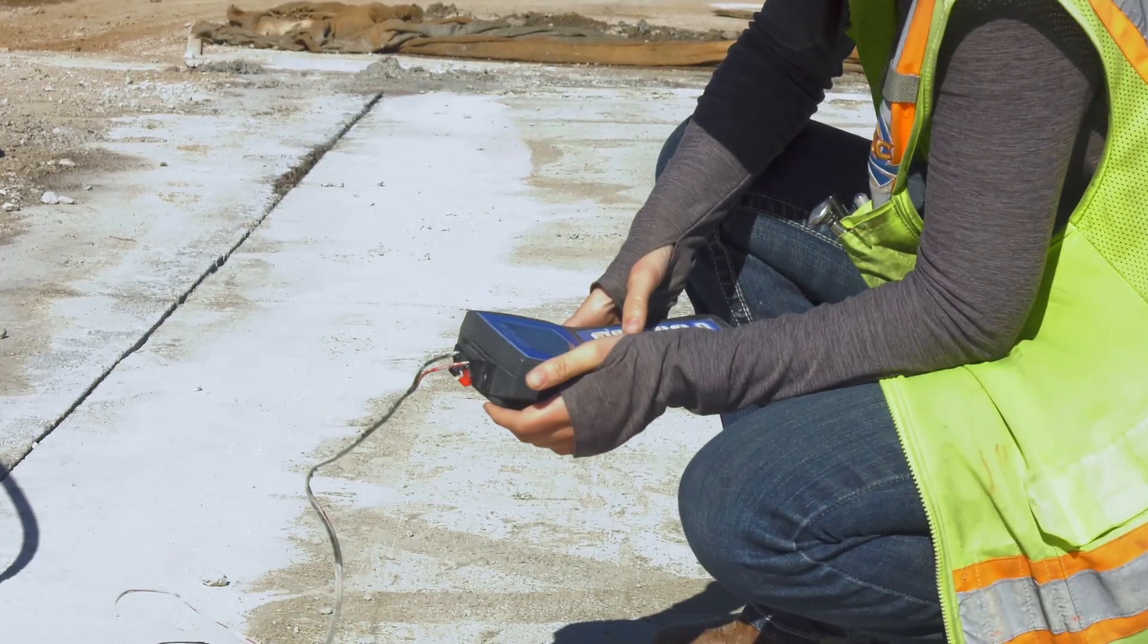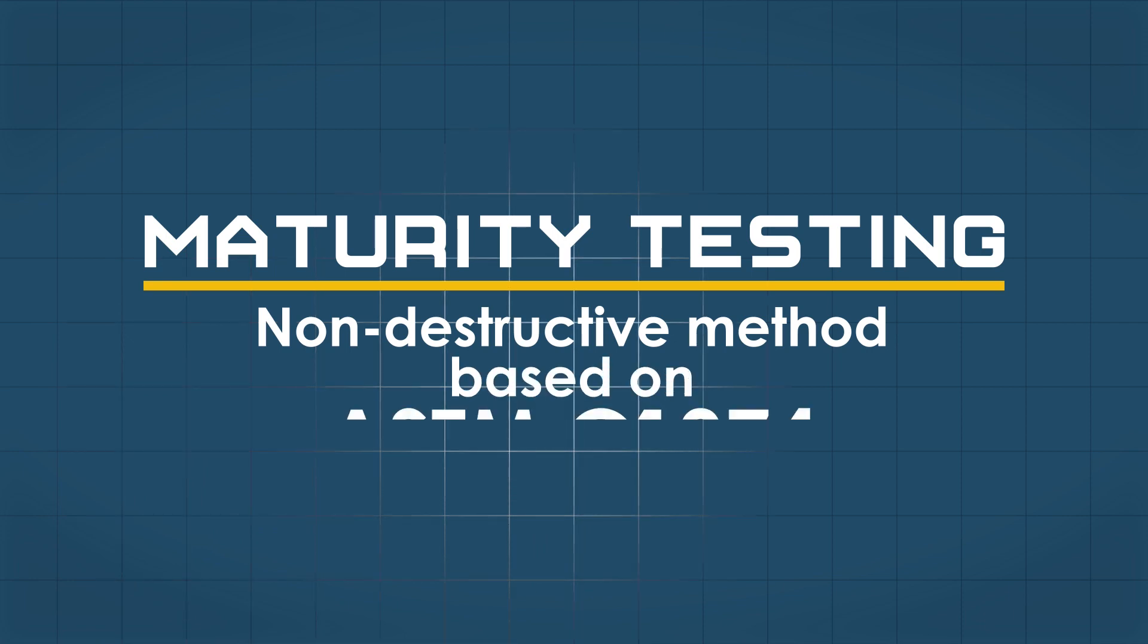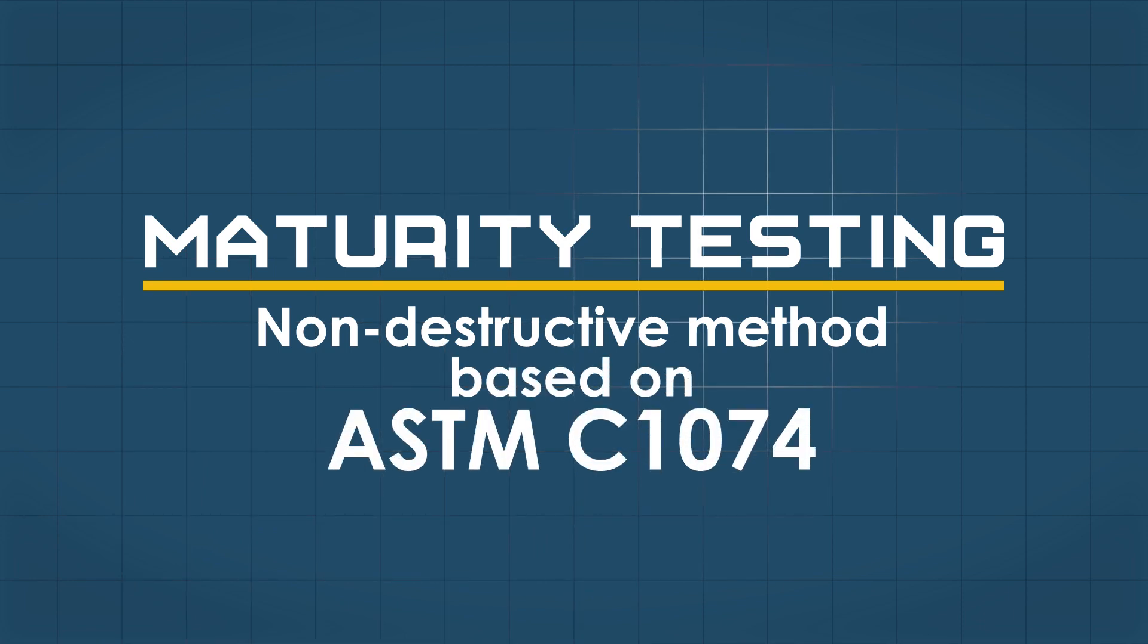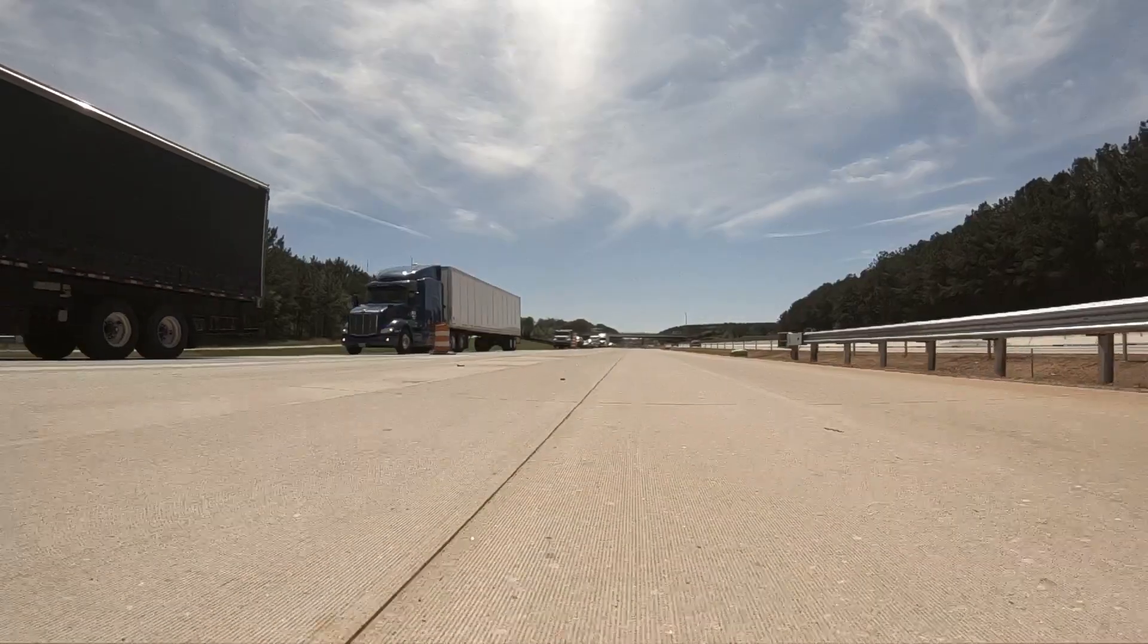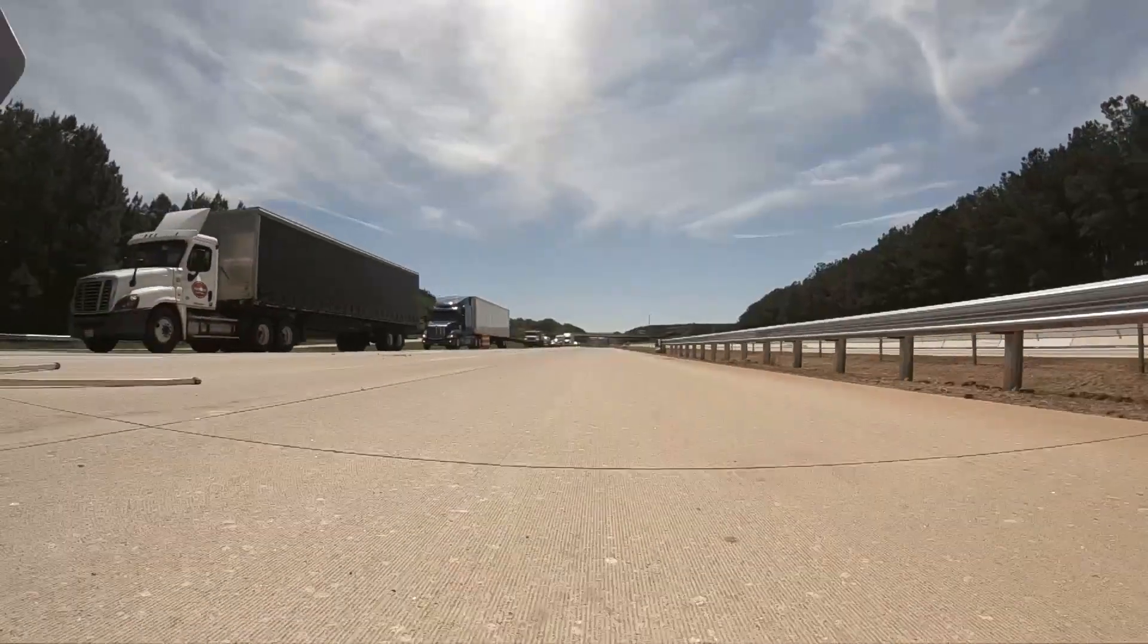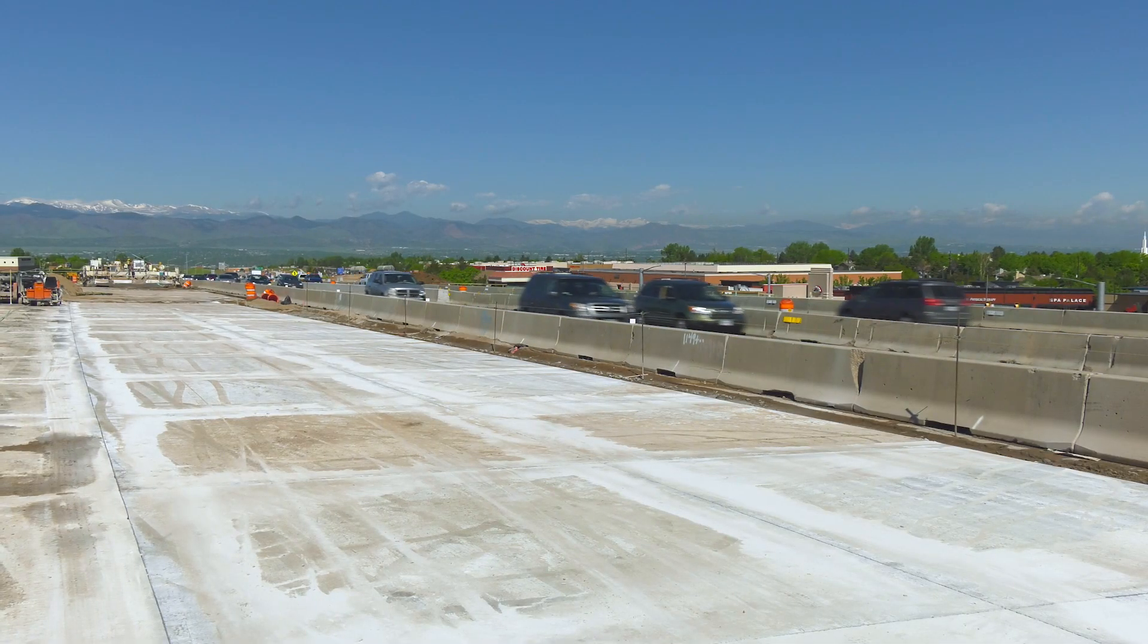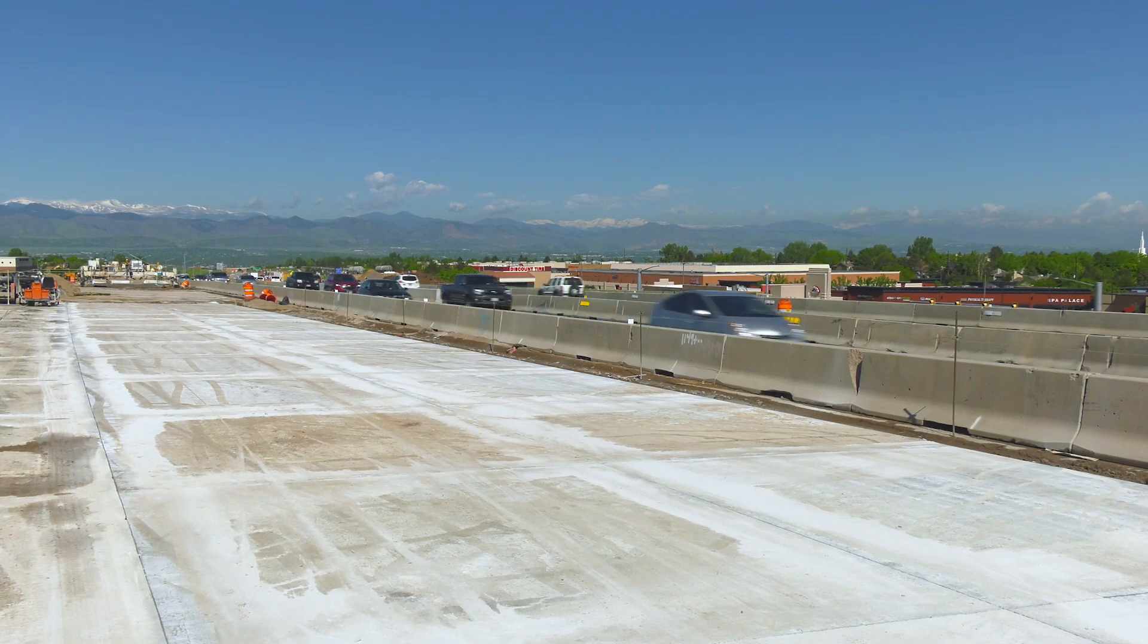That is where maturity testing comes in. Maturity testing is a non-destructive method based on ASTM C1074 that allows for better approximation of the strength of the in-place concrete during its early age, typically up to 14 days, based on time and temperature of the concrete during the curing and strength gain process.